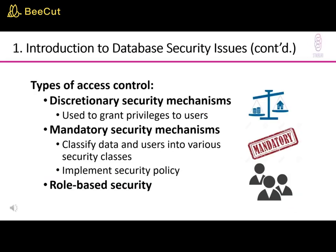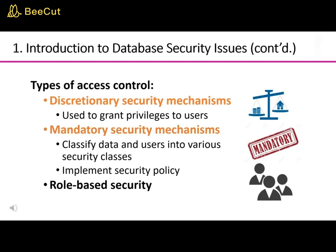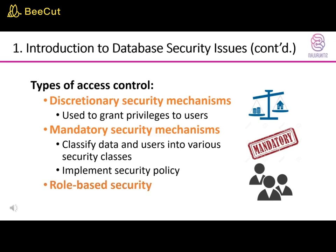There are three types of access control: discretionary security mechanisms used to grant privileges to users; mandatory security mechanisms that classify data and users into various security classes and implement security policy; and role-based security.